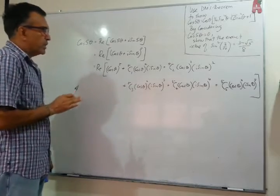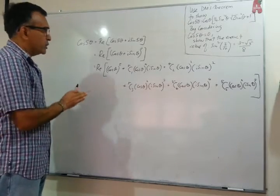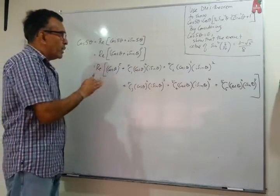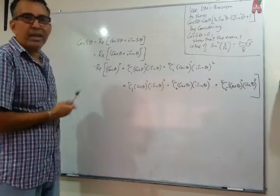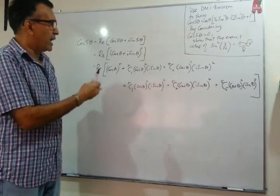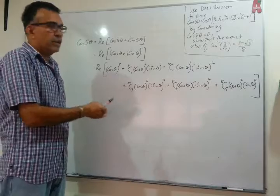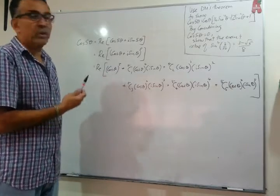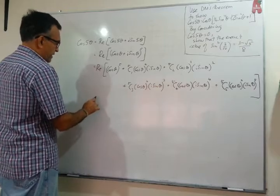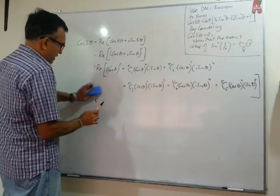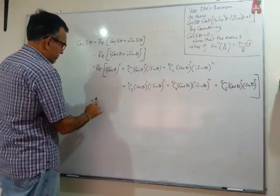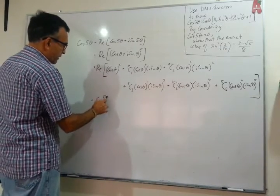Now we need to clean this up. Remember, we are only looking at the real part. So wherever we find i, i³, or i⁵, we don't need those terms because they are imaginary. Let's identify the real terms only. We have cos⁵θ as our first real term.